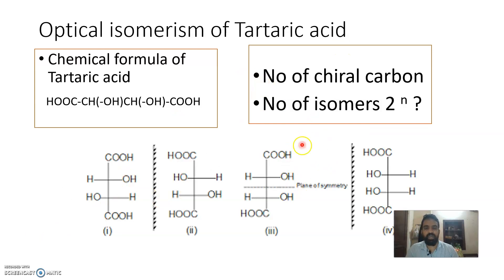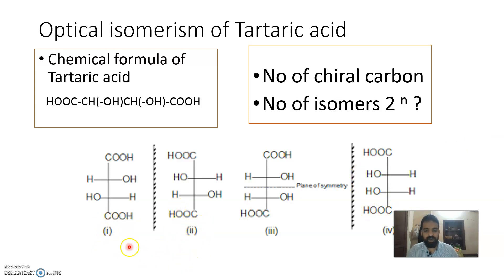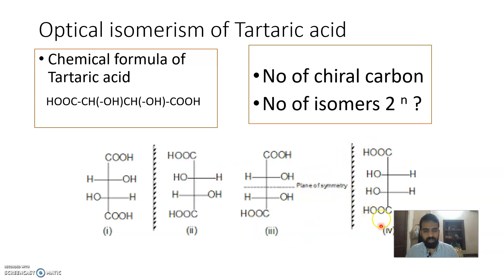These are the four different tartaric acid isomers: 1, 2, 3, and 4. In isomers 1 and 2, the OH groups are on opposite sides, while in isomers 3 and 4 the OH groups are on the same side. Isomers 1 and 2 are enantiomers. However, molecules 3 and 4 are actually the same molecule — this will be discussed later.